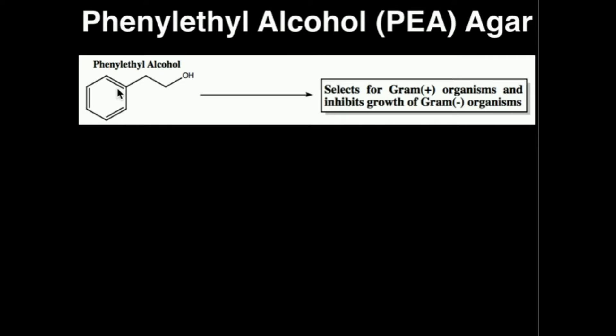The principle behind PEA agar is you inoculate your agar with the bacteria. If gram-positive organisms are on the PEA agar, you should still see significant growth. If it was gram-negative, you should not see significant growth — it won't kill them, it will just prevent their growth. So you're looking for a lot of growth or minimal growth. A lot of growth means you're dealing with a gram-positive organism; little to no growth means gram-negative.